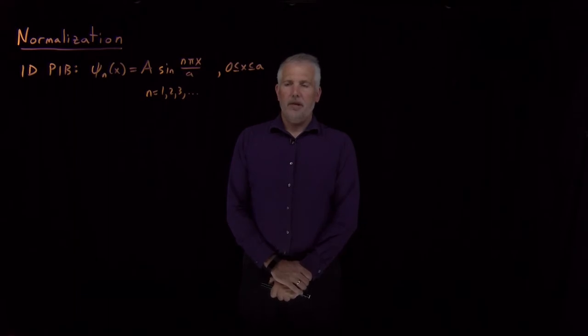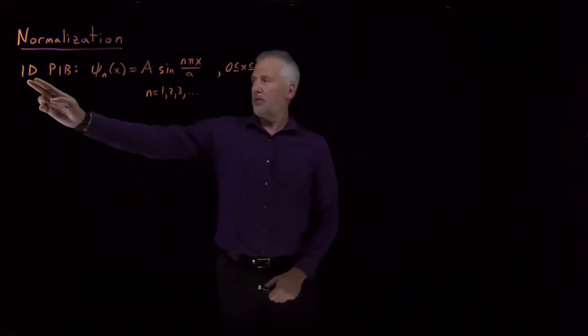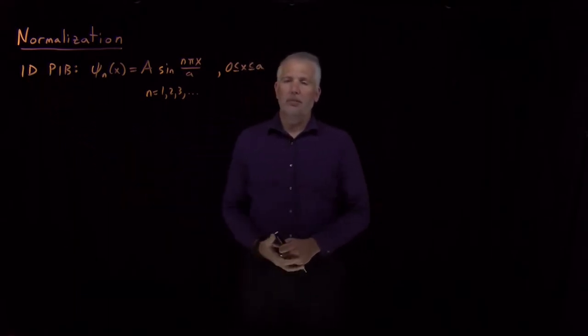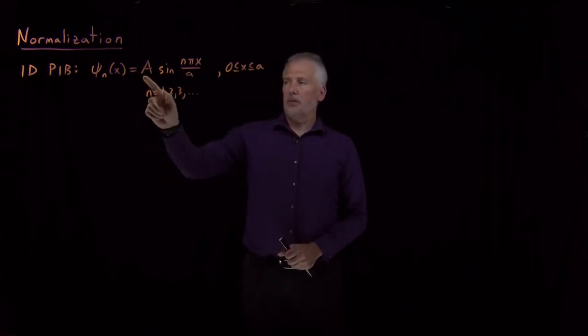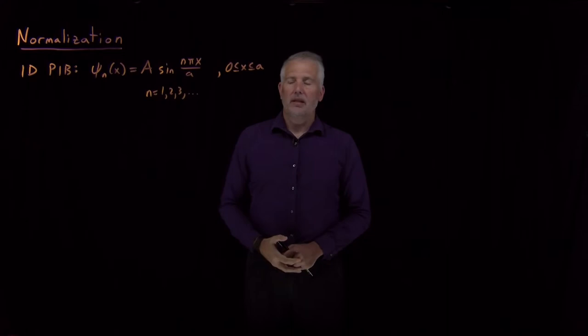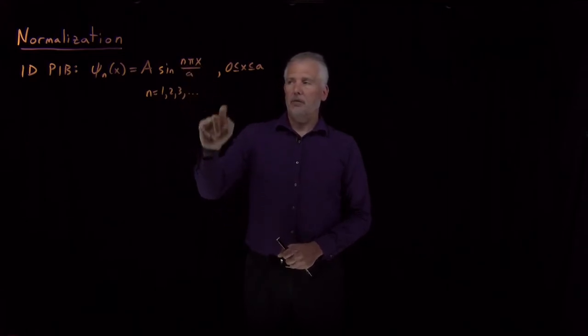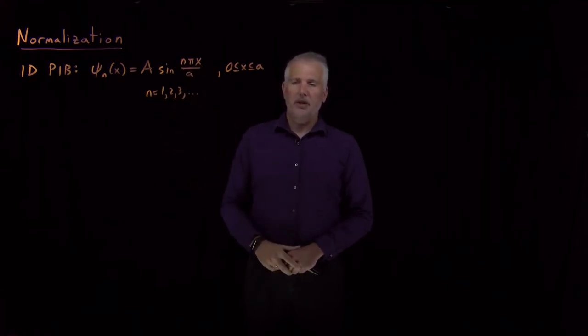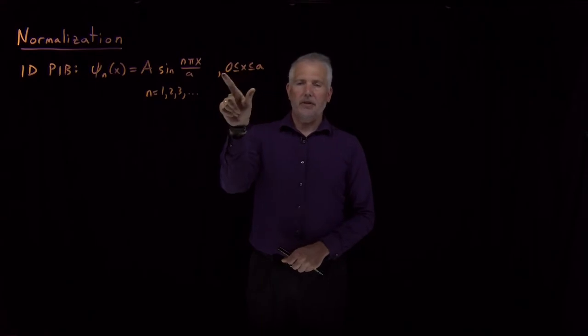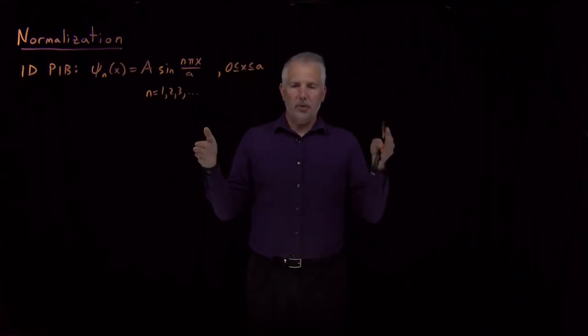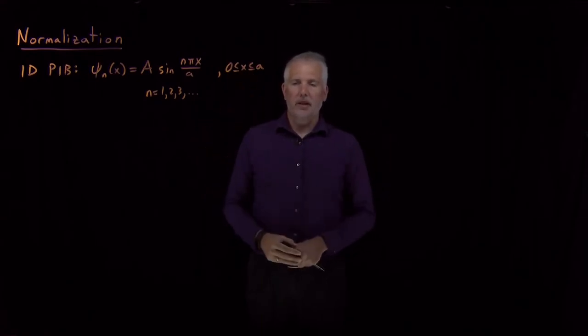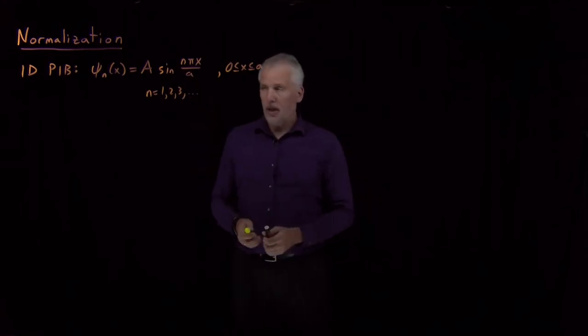Okay, so we've seen for the one-dimensional particle in a box problem that the solutions to the Schrödinger equation have this form: some constant times the sine of nπx over a, where n has to be an integer, and x has to be confined to this box we've defined somewhere between 0 and a. That's the particle in a box problem.